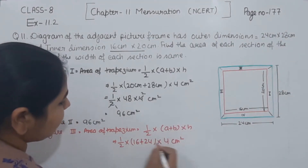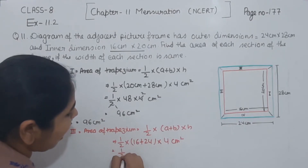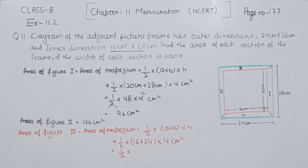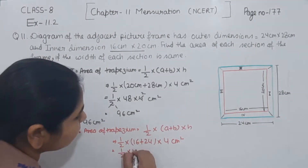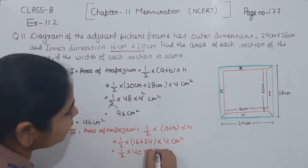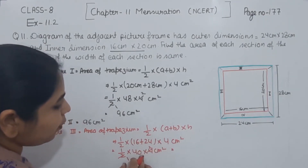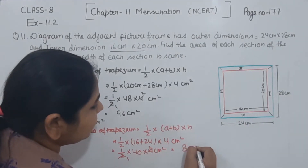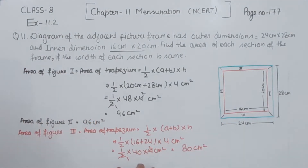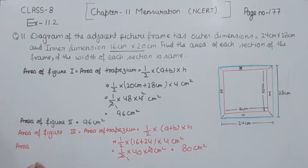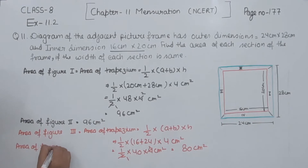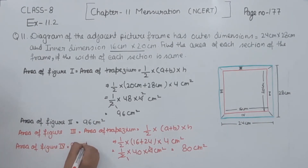Solving: half multiplied by 16 plus 24 equals 40, then 40 multiplied by 4 cm². So 40 multiplied by 2 gives 80 cm². The area of figure 3 is 80 cm². Since the area of figure 3 equals the area of figure 4, the area of figure 4 is also 80 cm².